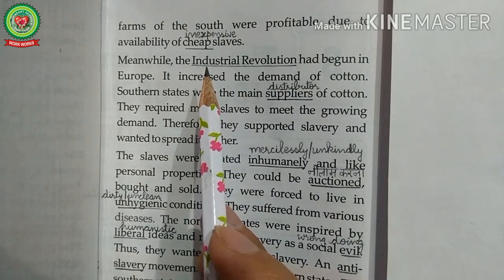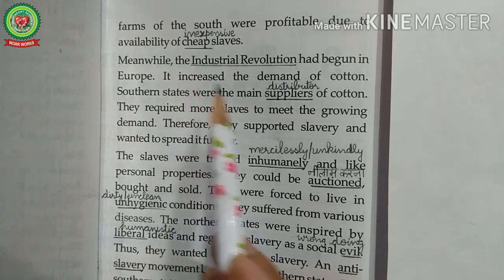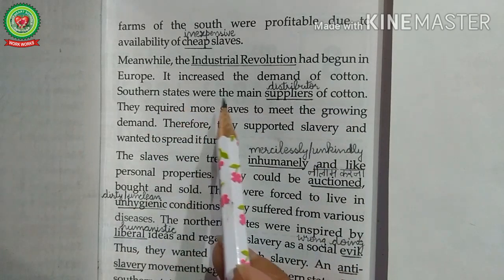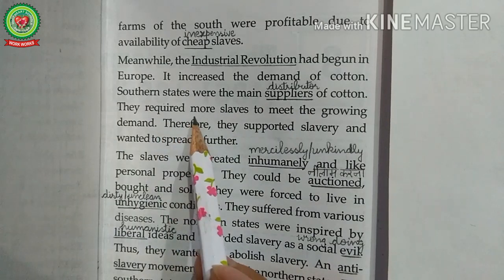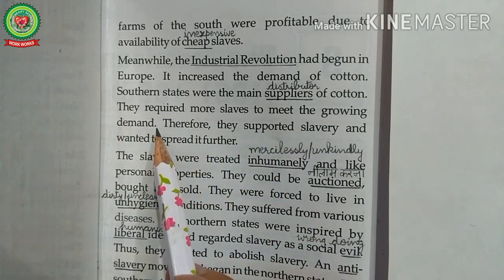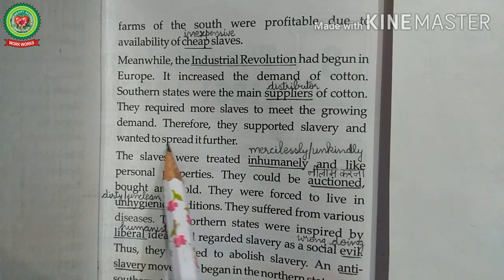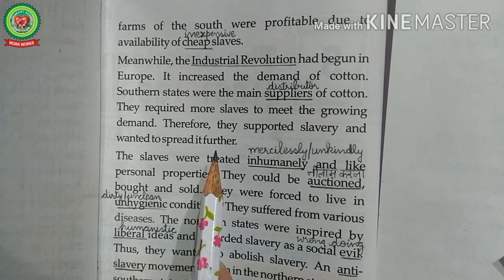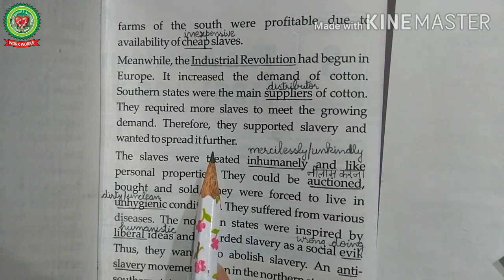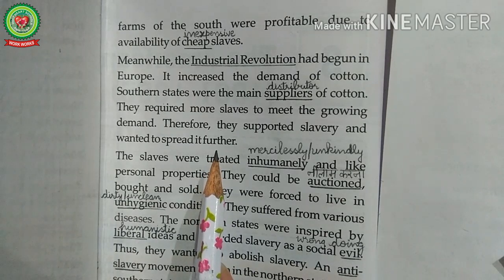Due to the Industrial Revolution, there was an increase in demand of cotton. Southern states were the main suppliers — meaning distributors — of cotton. They required more slaves to meet the growing demand. Therefore, they supported slavery and wanted to spread it further. As there was more demand of cotton and cotton is a labor-intensive crop, the southern states were completely in favor of slavery and wanted to spread it.